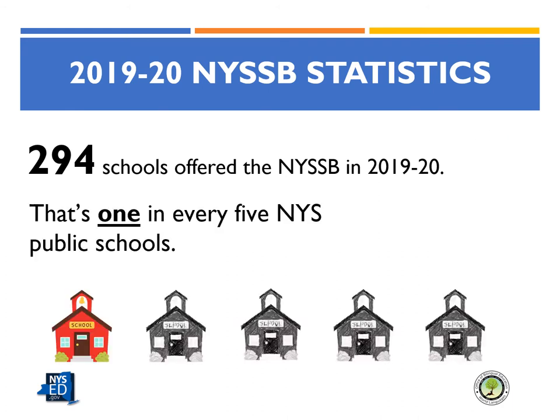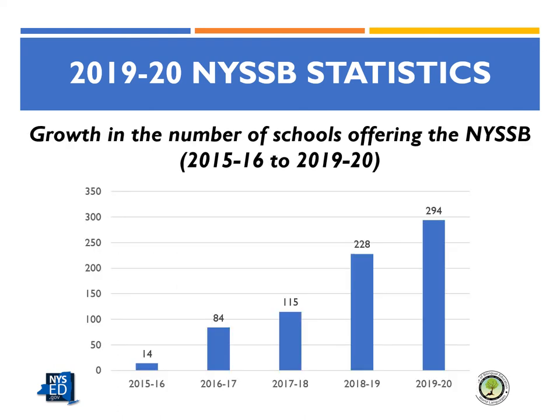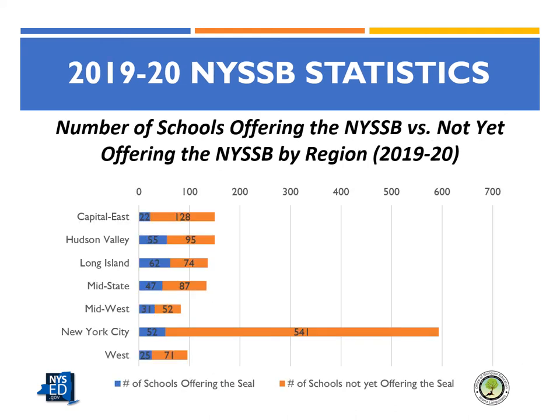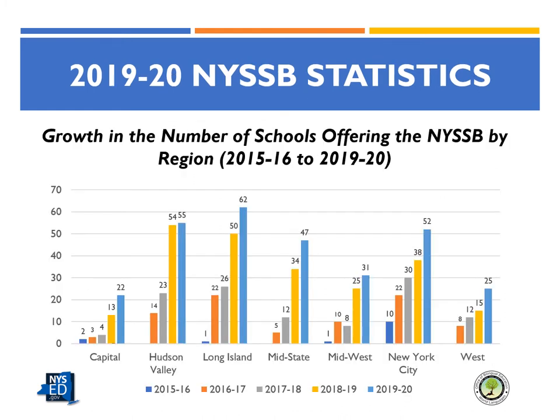In 2019–20, there were 294 schools that offered a Seal of Biliteracy program, representing one in every five New York State public schools. The growth of the program has been substantial since its beginning in 2015–16 with only 14 pilot schools, and each year has seen a significant increase in participating schools. The seal is offered in every region of the state, as shown in a graph displaying schools currently offering the seal in blue versus those not yet offering it in orange, indicating significant potential for growth in every region.